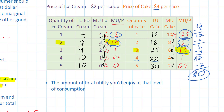For ice cream, I'm going to enjoy seven total utils, and for cake, I'm going to enjoy 24 total utils. So seven plus twenty-four gives me a total utility of 31 utils.